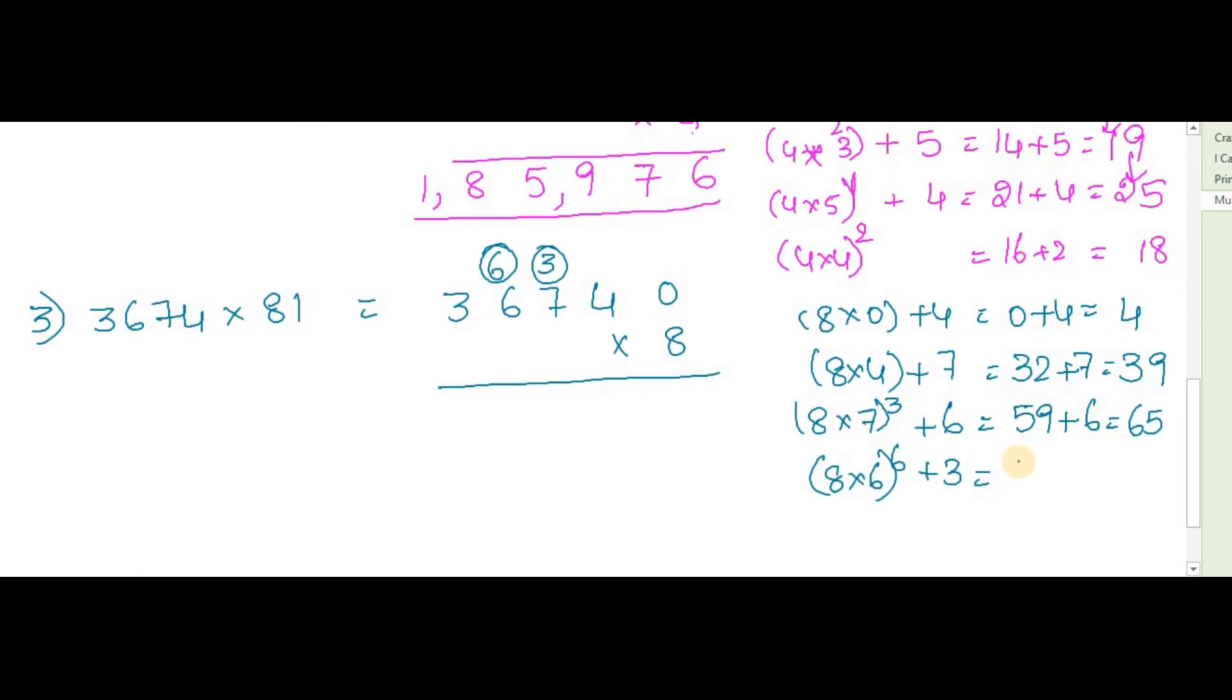8 into 6, carry 6 plus 3. 8 sixes are 48, plus 6 equals 54, plus 3 equals 57. Now we are left over with last digit with a carry 5. 8 into 3 plus carry 5. 8 threes are 24 plus carry 5 is 29.